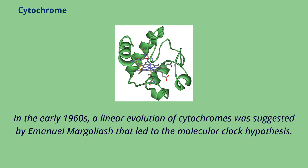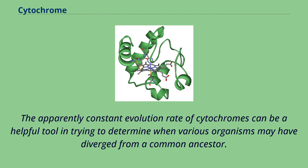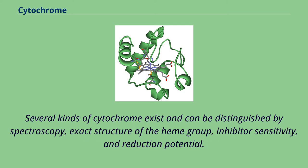In the early 1960s, a linear evolution of cytochromes was suggested by Emanuel Margoliash, which led to the molecular clock hypothesis. The apparently constant evolution rate of cytochromes can be a helpful tool in trying to determine when various organisms may have diverged from a common ancestor. Several kinds of cytochrome exist and can be distinguished by spectroscopy, exact structure of the heme group, inhibitor sensitivity, and reduction potential.